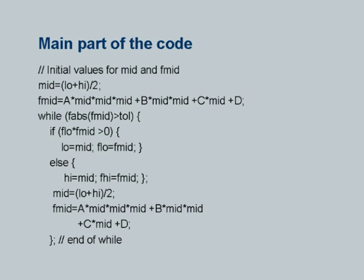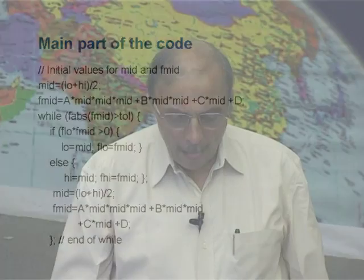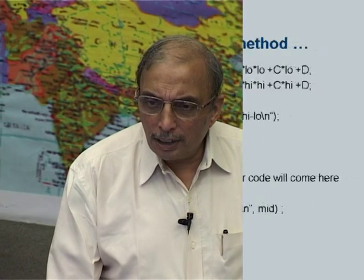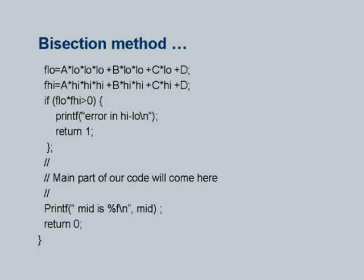What we are doing in each iteration is simply checking whether the new function value at f_mid is better than tolerance — if it is I will repeat the iteration, and so on. This then is the main part of the code, which will appear at the place I indicated in the program in the previous slide. This is where I will write this main part of the code.